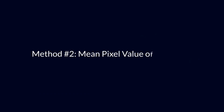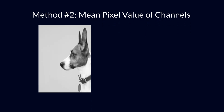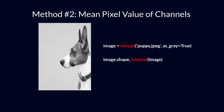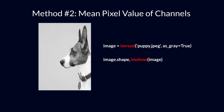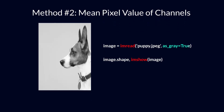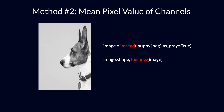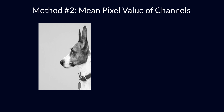Let us move to the second method called mean pixel value of channels. While reading the image in the previous section, we had set the parameter as gray equals true, so we only had one channel in the image and we could easily append the pixel values.